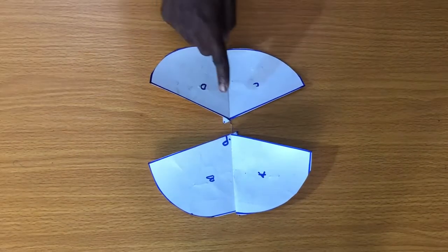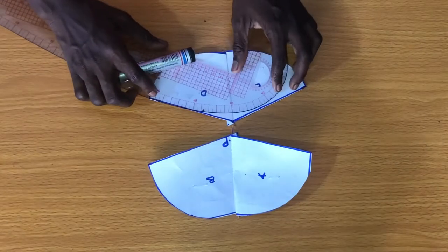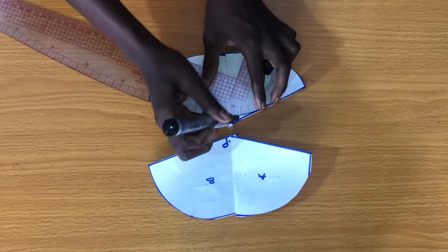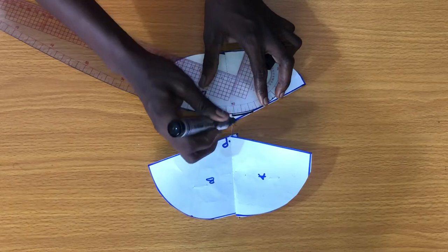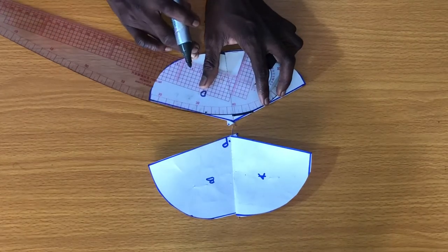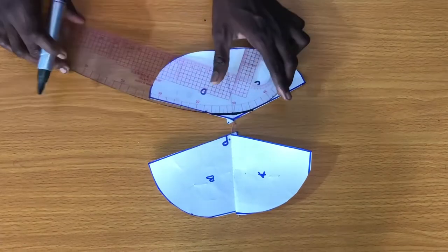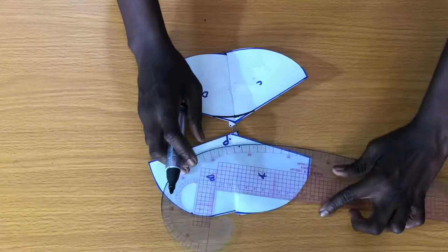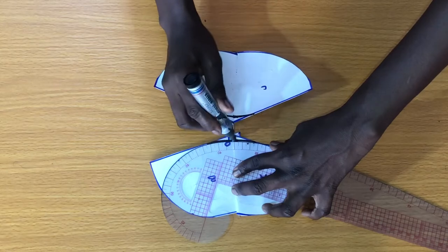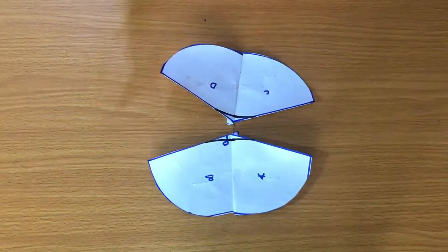Now the next step is to subtract about 0.5 cm from the bust point so it isn't too pointed when sewn. Now you should trim the excess part.